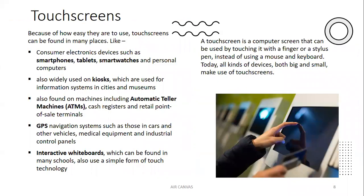Existing systems include touch screens — a computer screen that can be used by touching it with a finger or a stylus pen instead of a mouse or keyboard. Different touch screens used in today's market include smartphones, tablets, smartwatches, kiosks, automatic teller machines, GPS navigation systems, and interactive whiteboards. To talk about the disadvantages of the existing system, there are actually no disadvantages. Moving to the proposed system is just an upgrade — we are simply moving from touch screens to touchless screens, but there are no disadvantages with the current existing system.